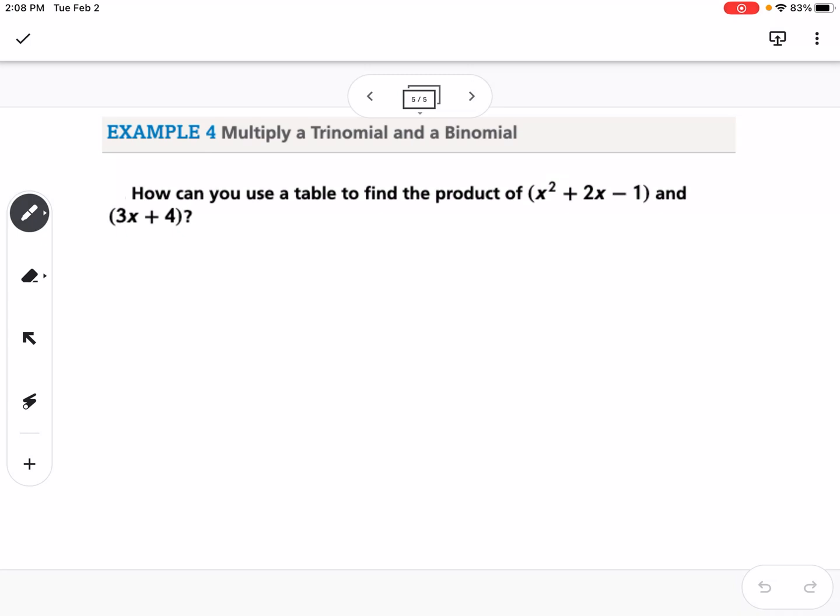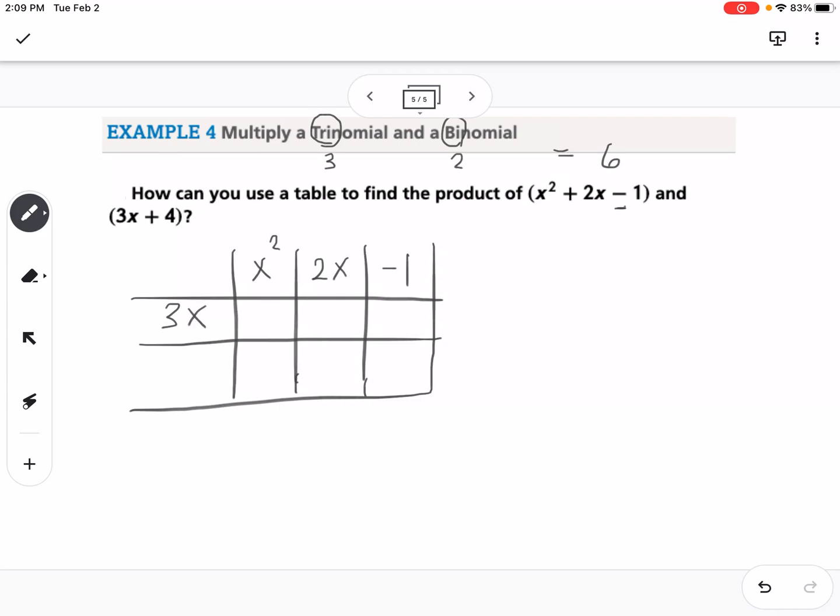The last thing is, how can you use a table to find the product of x squared plus 2x minus 1 and 3x plus 4? This is a trinomial and a binomial. We have 3 terms times 2 terms, so when we multiply it out, we're going to have 6 terms before we simplify. They're suggesting a table. It doesn't matter which one you put on the side and which one you put on the top, but I'm going to put the 3 terms on the top. So I have x squared, 2x, negative 1. Notice I have that minus, so I'm keeping it with the 1. And then I have 3x and 4.